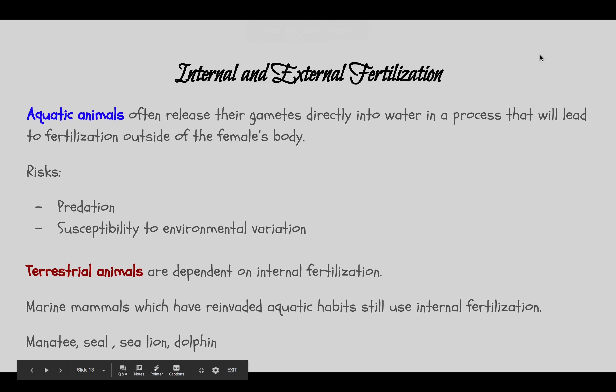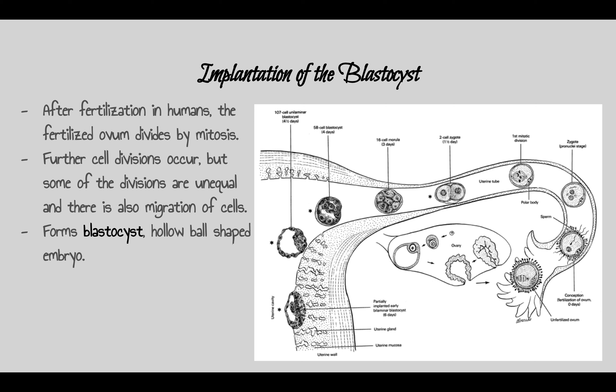Aquatic animals release their gametes directly into the water, but this carries higher risk of predation and environmental variation — temperature or pH changes can put eggs at risk. Terrestrial animals use internal fertilization; the zygote/embryo grows inside the uterus. In evolution, some marine mammals such as manatees, seals, sea lions, and dolphins returned to water but still use internal fertilization.